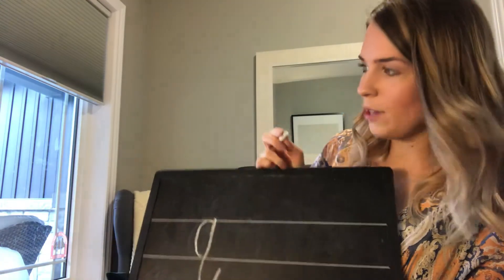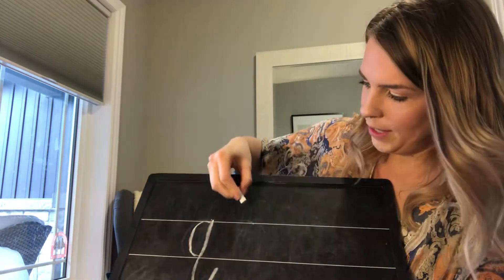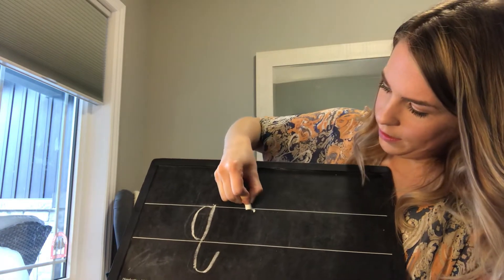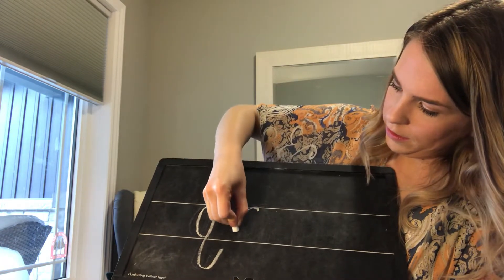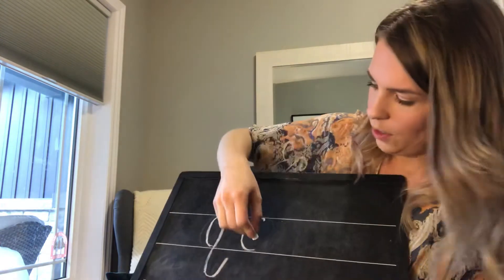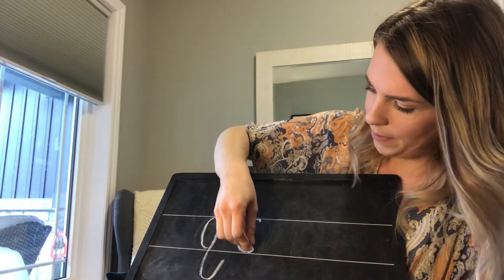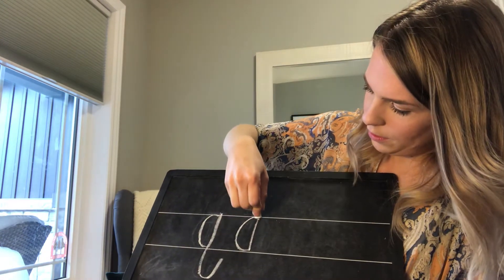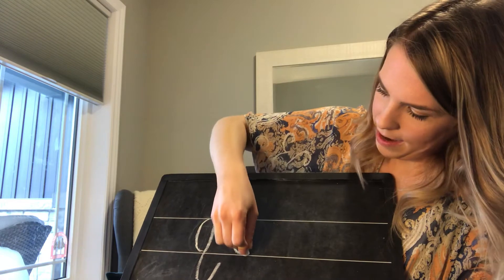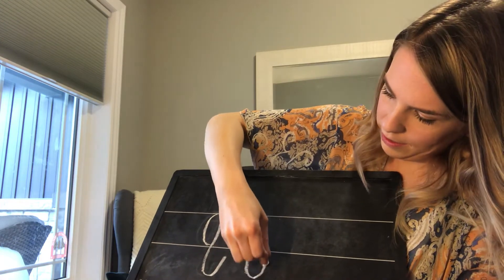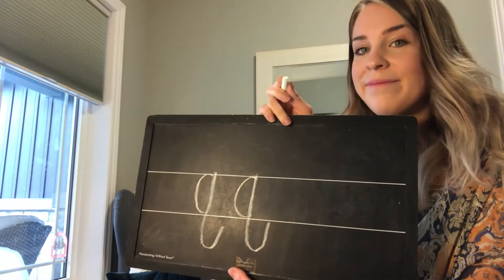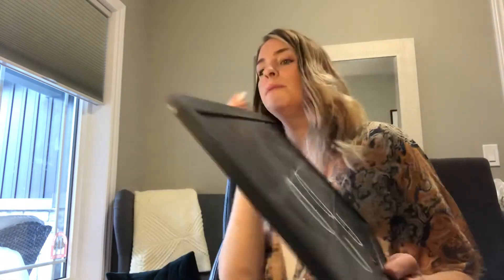Alright, we'll try that one again. So we'll start with our magic C. Here's our C. We're going to go up like a helicopter. And we'll go back down. And U-turn. Alright, there's my Q.